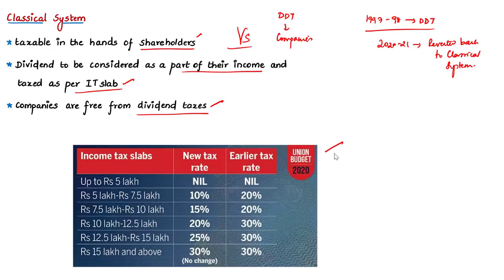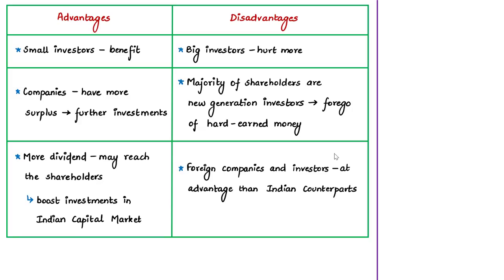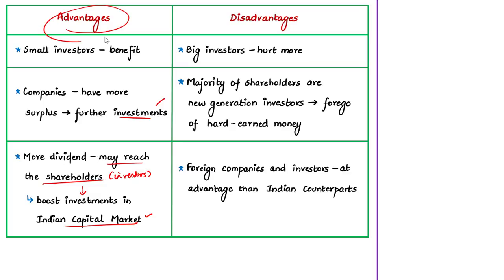What is the advantage of this classical system? Shareholders in the lower tax slabs will have to pay lower tax. As companies are freed from paying DDT, they will have more surplus money — meaning companies can further invest in the business and may pay higher dividends to shareholders. If there is more money in the hands of investors — whether Indian or foreign shareholders — it will again boost investments in the Indian capital market.